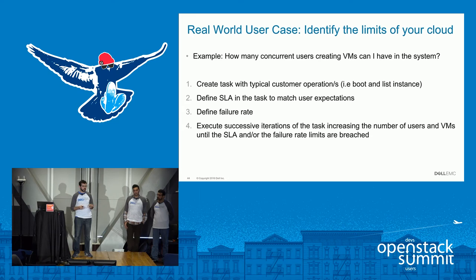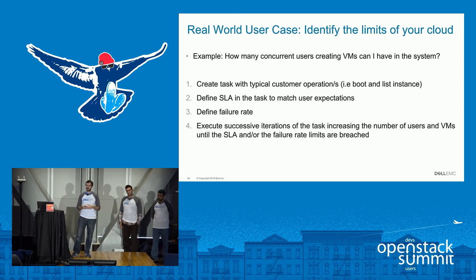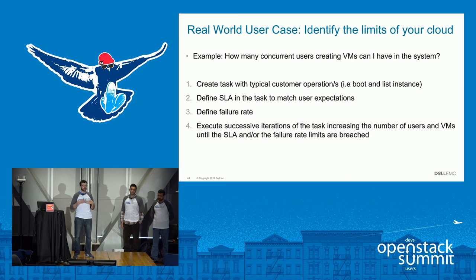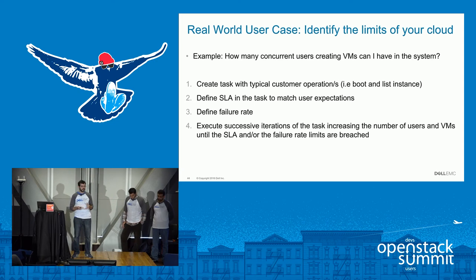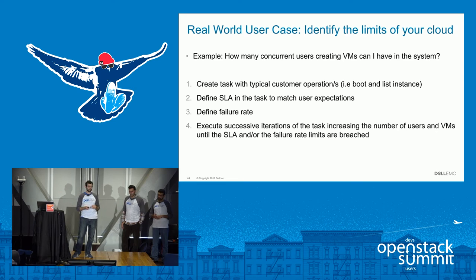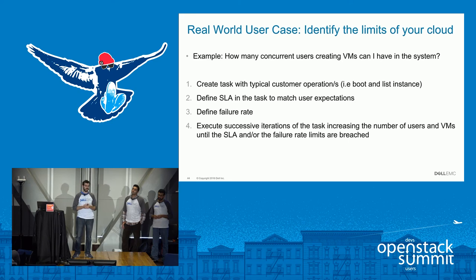Let's take a look at two real-world use cases. The first one is identifying the limits of my cloud. The example we'll use is: how many concurrent users can I have creating VMs in my system? To do that we will: create a task with a typical customer operation — boot and list an instance; define an SLA to match user expectations; define a failure rate; and execute successive iterations increasing the number of VMs and users until the SLA is breached.